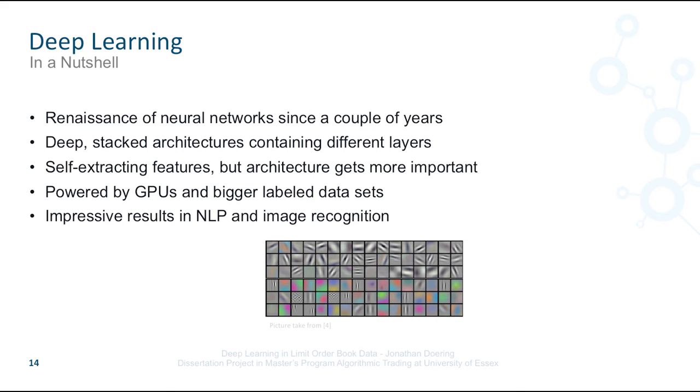As an example, the shown picture represents features extracted by a convolutional layer trained on image data. It looks like the network figures out features like edges, dots and polygons.